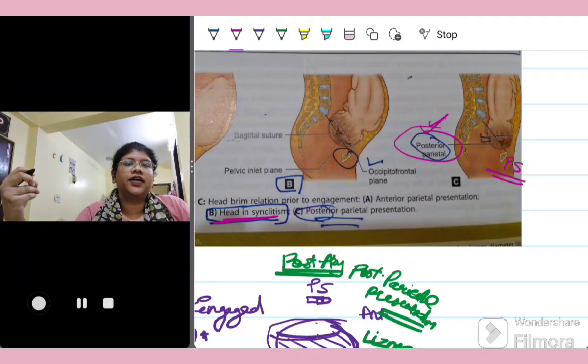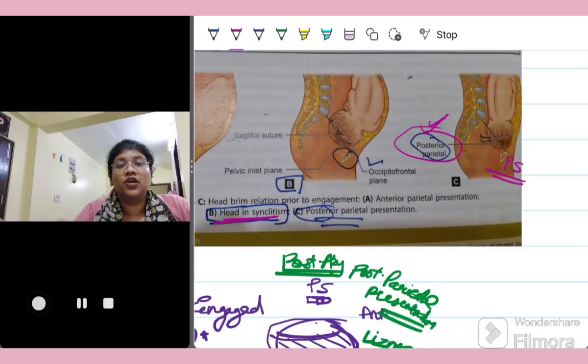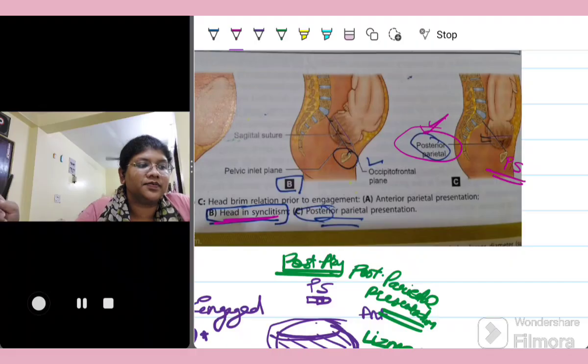So why is this asynclitism happening? Now, nature has created this. So there must be some purpose for that. So it is because the engagement of head with asynclitism, the two parietal eminences cross the brim one at a time.